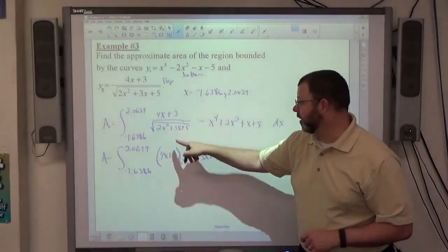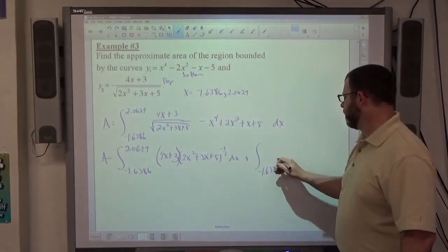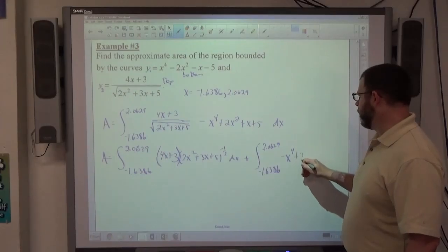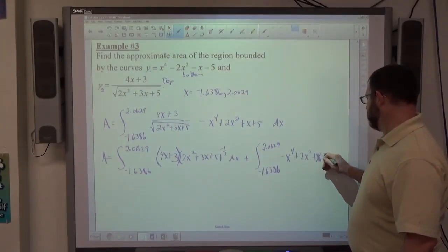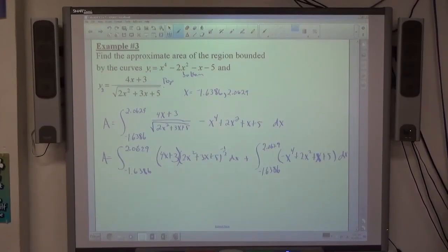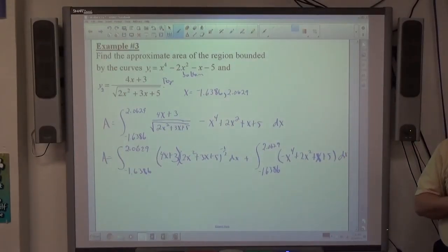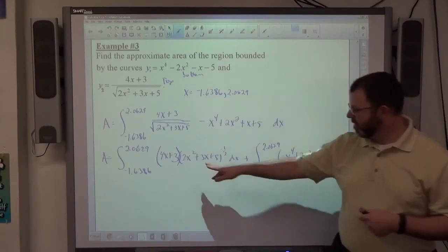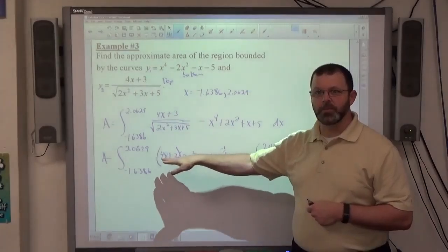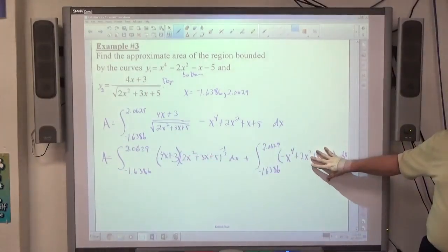Now, the thing about integrals is this: I can integrate this whole thing a piece at a time or I can separate it into separate integrals. So if I went negative 1.6386 up to 2.0629 of 4x plus 3 parentheses, 2x squared plus 3x plus 5 to the negative 1 half dx. I think we can all agree that this is the portion we don't like very much, right? This one here looks pretty unfriendly. Notice 4x plus 3 in parentheses, all this I put to the negative 1 half power dx. And then I'm going to do plus integral from negative 1.6386 up to 2.0629 of negative x to the 4th plus 2x squared plus x plus 5 dx. This portion over here is pretty friendly looking, right?